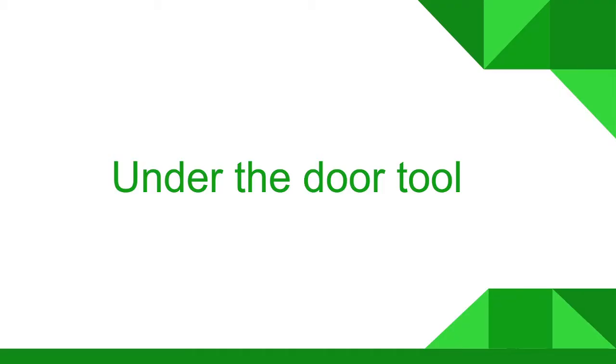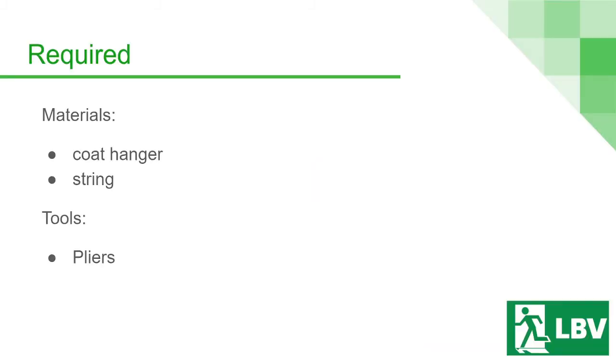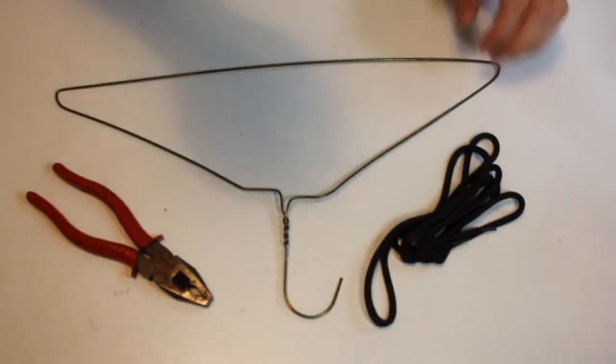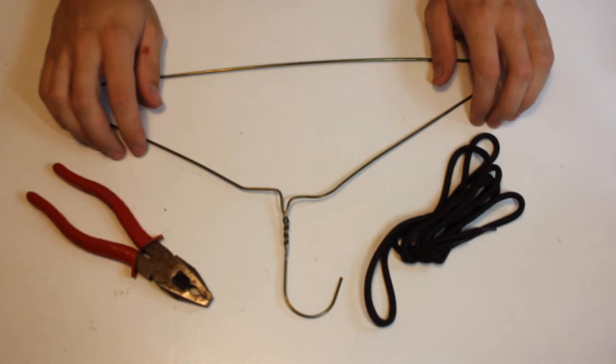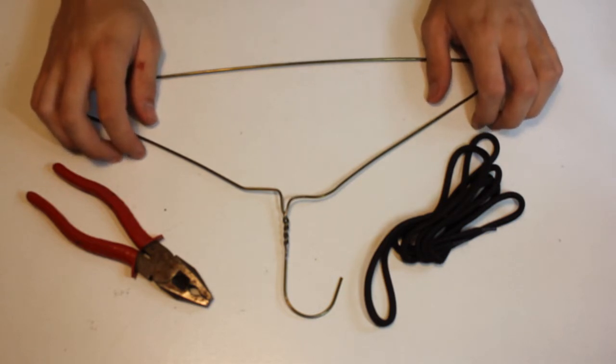Next, we'll be making the under the door tool. The materials required are a coat hanger and a piece of string. You will also need a pair of pliers. In this video, we're going to be making the under the door tool.